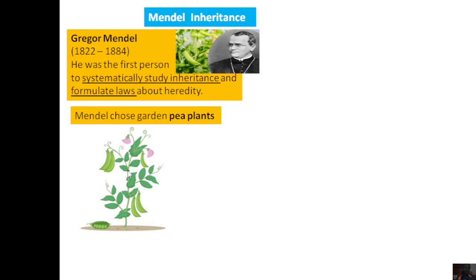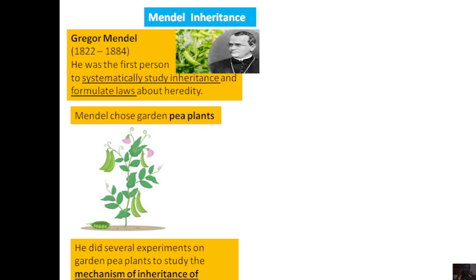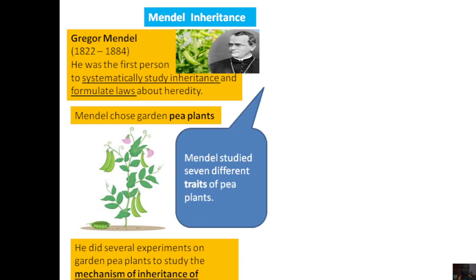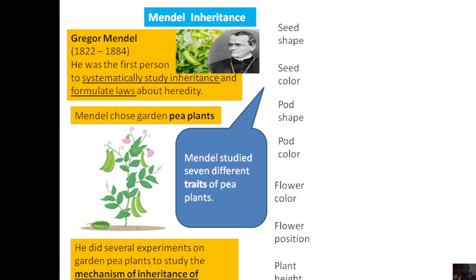Mendel did several experiments to explain the mechanism of inheritance. As a first step, he identified seven different traits of pea plants — seven pairs of traits with 14 varieties. Those seven different traits are: seed shape, seed color, pod shape, pod color, flower color, flower position, and plant height. These are the seven traits that Mendel identified for his experiments.